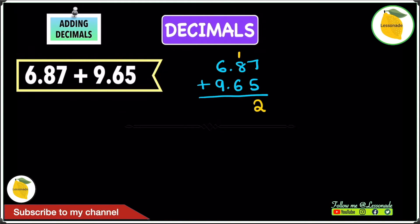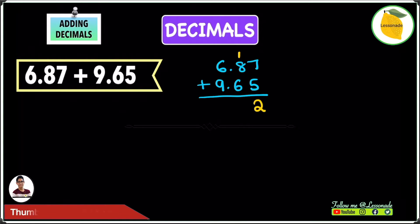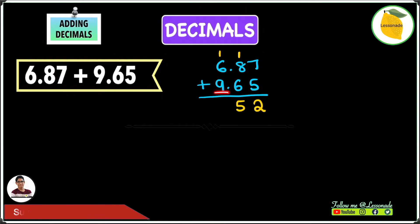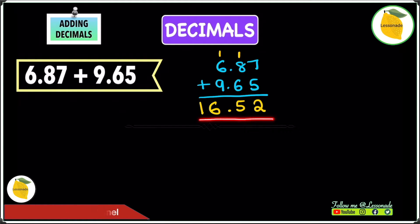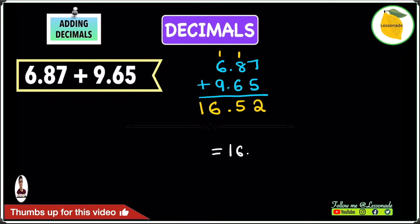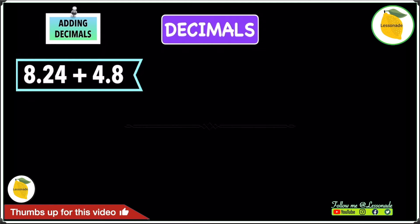1 plus 8 is 9, and 9 plus 6 is 15 — write the 5 and take the 1 as a carry. So 1 plus 6 is 7, then 7 plus 9 is 16. Write 16 and the decimal point, giving us an answer of 16.52.